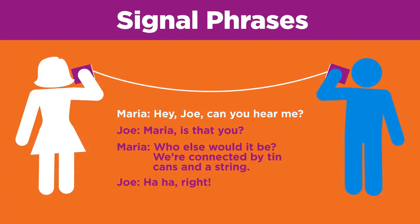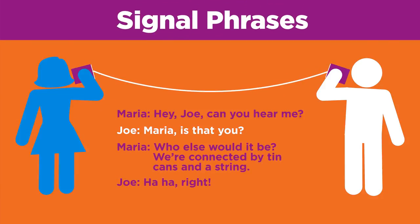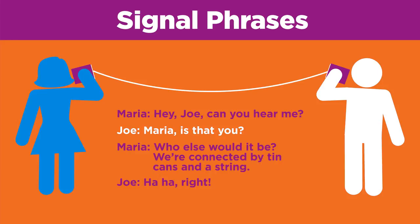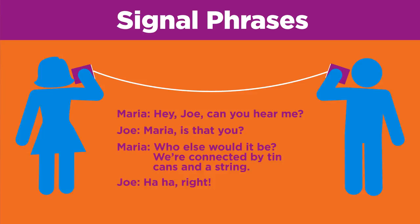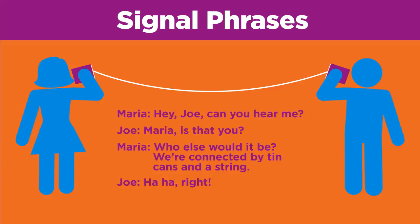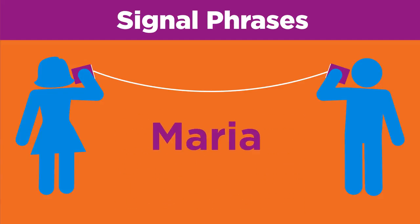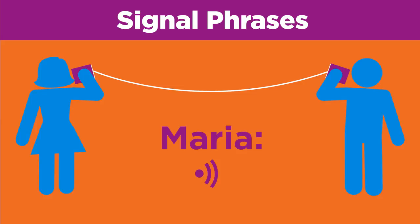This is a lot like how authors of plays indicate who is saying what in the play. For example: 'Hey Joe, can you hear me? Joe.' 'Maria, is that you?' 'Who else would it be? We're connected by tin cans and a string.' You get the idea.